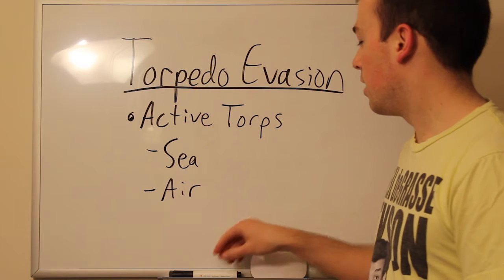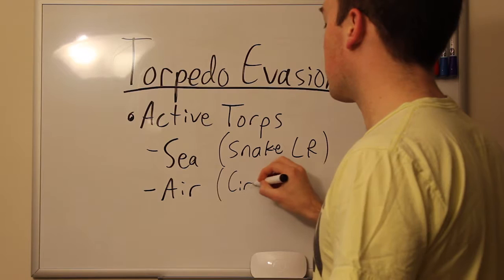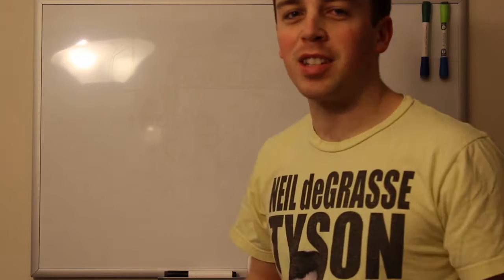So today we're going to be looking at active torps from both the sea and the air, or maybe more commonly evading snakes from long range versus circle search torps from short range. So that's what we're going to be looking at today. So let's get started with active torps sea, snake long range.